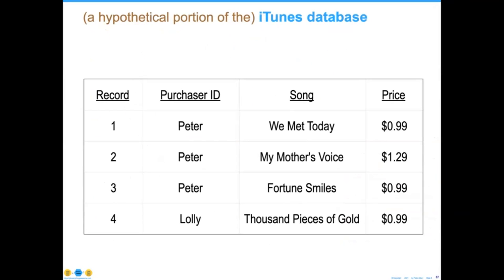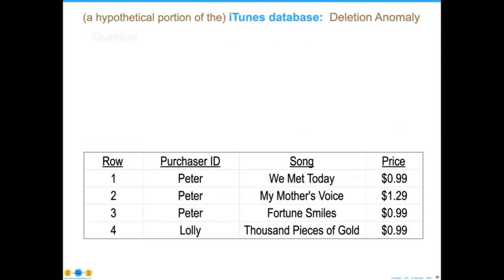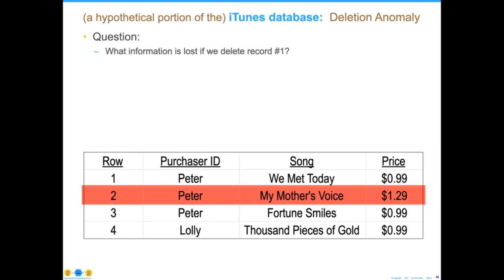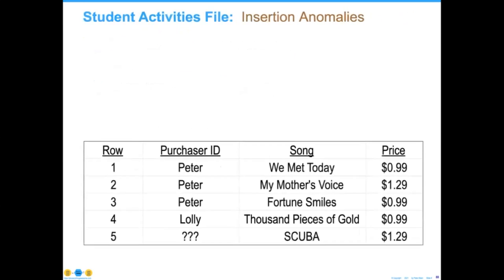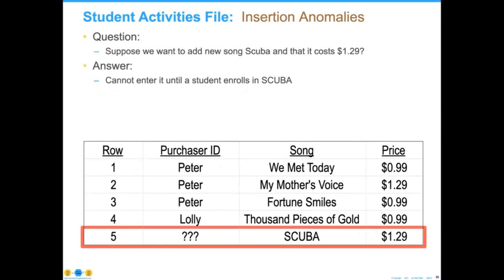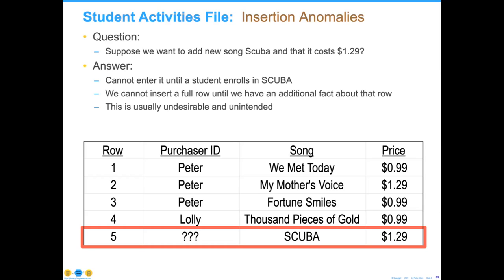Let's take a look at this iTunes database. Here's an example of a model somebody might put together. I purchased some things and I've got the price for them. But what happens if I lose record number one? I lose the fact that this costs a certain amount of money. Also, if I want to insert a song called Scuba, I can't add a song called Scuba until I have actually purchased it — that's a problem. This illustrates bad data model design. You can also have update anomalies: if I want to change the price of Scuba from $1.29 to $1.99, I have to go find every instance of Scuba in my entire database.